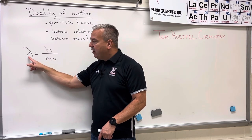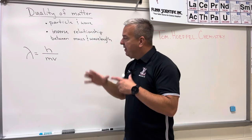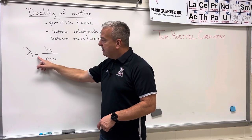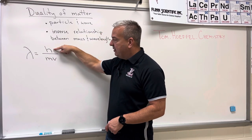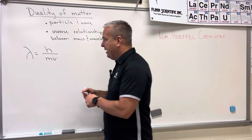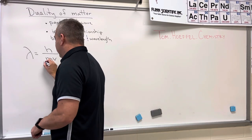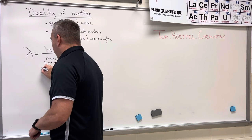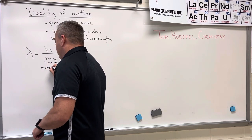We have this equation for wavelength. Now this equation is wavelength equals Planck's constant over mass times velocity, and mass times velocity in physics is also known as momentum.